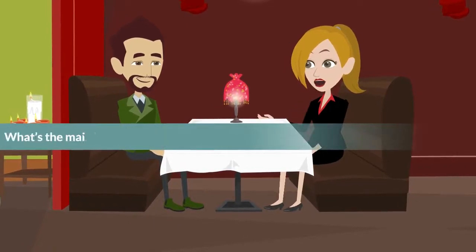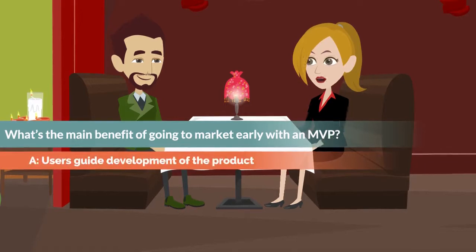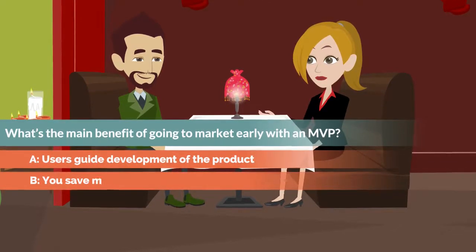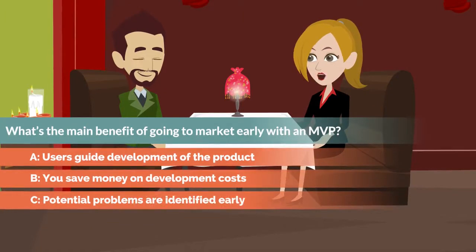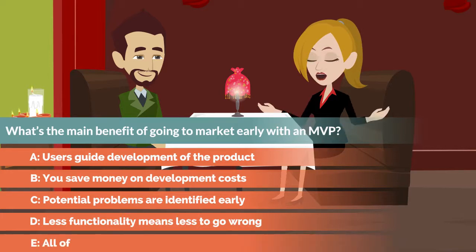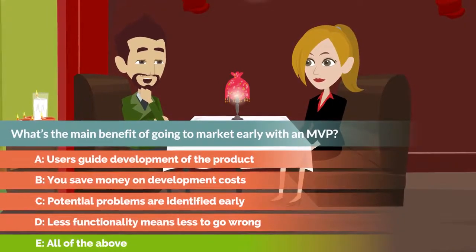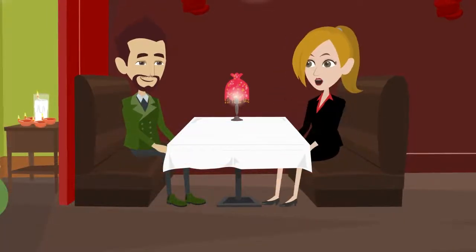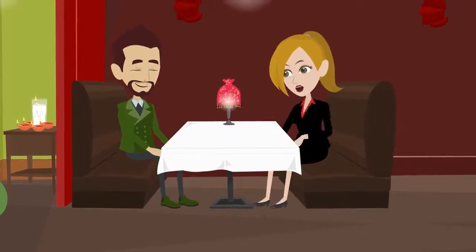Question 2: What's the main benefit of going to market early with an MVP? A: Users guide development of the product. B: You save money on development costs. C: Potential problems are identified early. D: Less functionality means less to go wrong. E: All of the above. They all sound like benefits to me — is it E? Yes, it is. There are so many positives about going to market with an MVP that it seems silly not to.